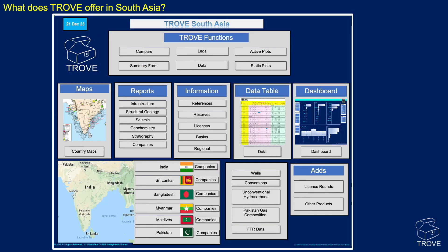So what does Trove offer in South Asia? This is our introductory page. We've got maps, reports, information on reserves, licenses, basins, and regional overviews. We've got data tables, dashboards, and introductions to all the countries in the region: India, Sri Lanka, Bangladesh, Myanmar, Maldives, and Pakistan. We've also got all the information on the companies that are active in those particular areas.